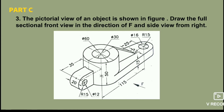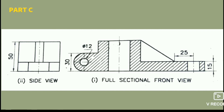If you have a full sectional view, you can answer the right side view. The right side view has 25 marks. The easiest part is the sectional view, which carries 12 to 15 marks. The side view has 7 marks and 3 marks. The left side view has 25 marks. These are the most important marks for the right side.